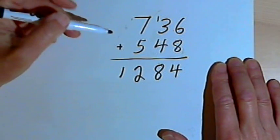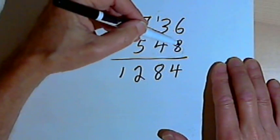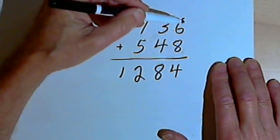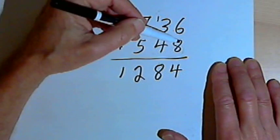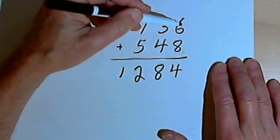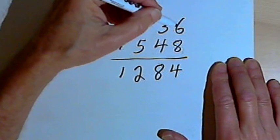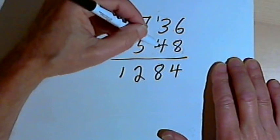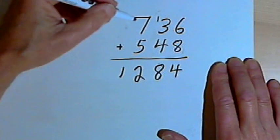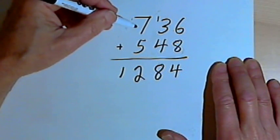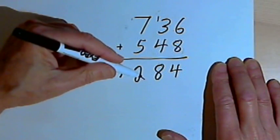Now, if you think about what I've just done, basically I started on the right side of both of those numbers, where the ones are. I added up what I have in the ones column, and then I moved to the left to the tens column, added those up, and moved to the left again to the hundreds column, added those up and I got my answer.